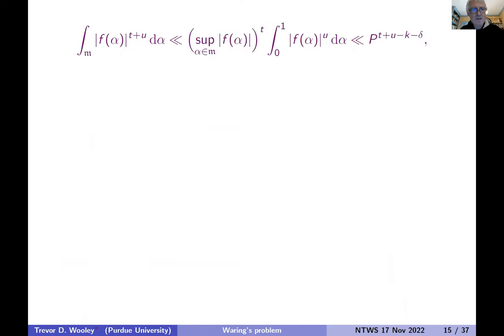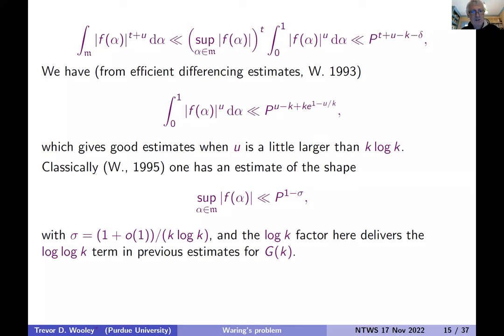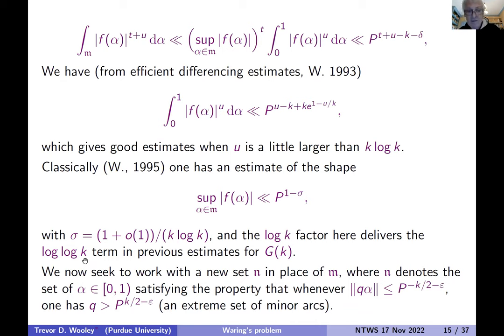So we have quite good upper bounds for the mean values of these smooth exponential sums, where you win an amount, you don't quite achieve the optimal estimate, but you lose an amount which drops off exponentially. But this is acceptable when u is a little larger than k log k. And one can obtain upper bounds on this classical set of minor arcs where you win relative to a trivial estimate an amount which is something like one over k log k exponent.